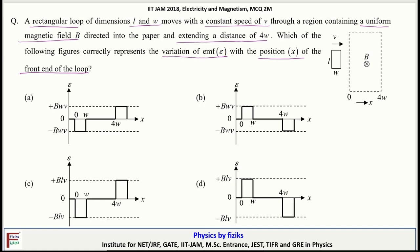Now if we see the correct option, so from given option C, you can see that induced EMF will be minus B L v from 0 to W and from W to 4W it is 0 and from 4W onward that is plus B L v. So option C is correct.